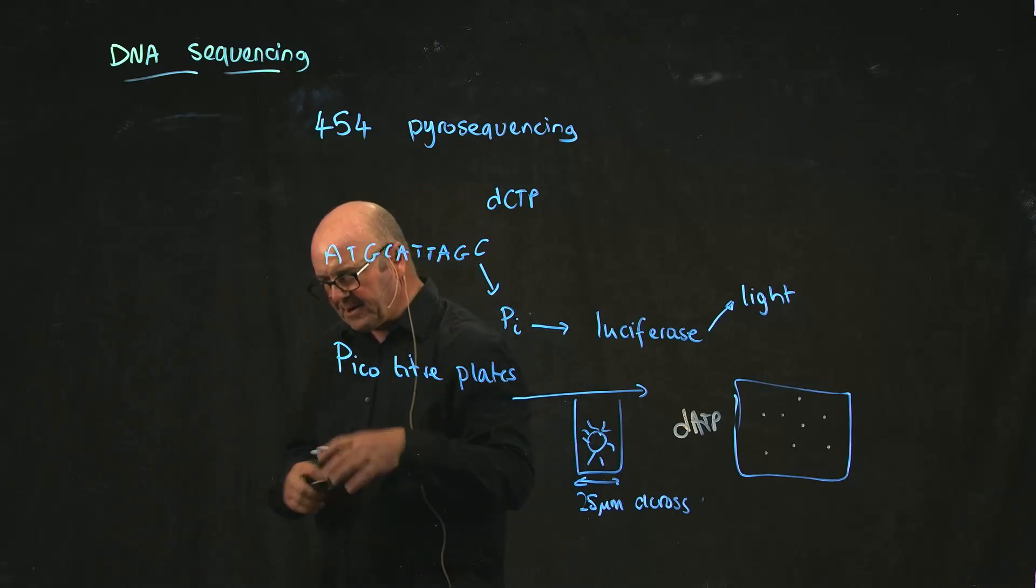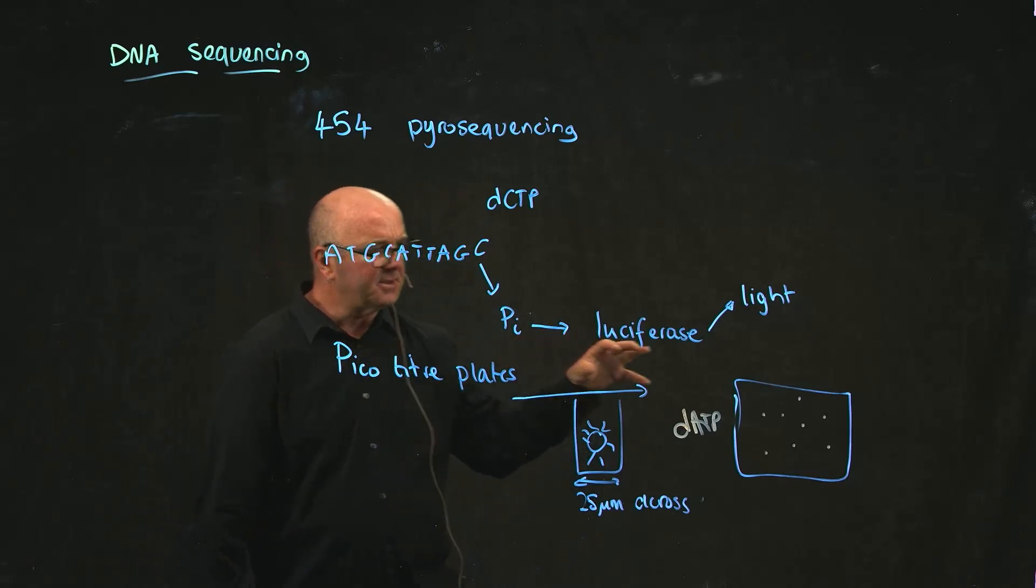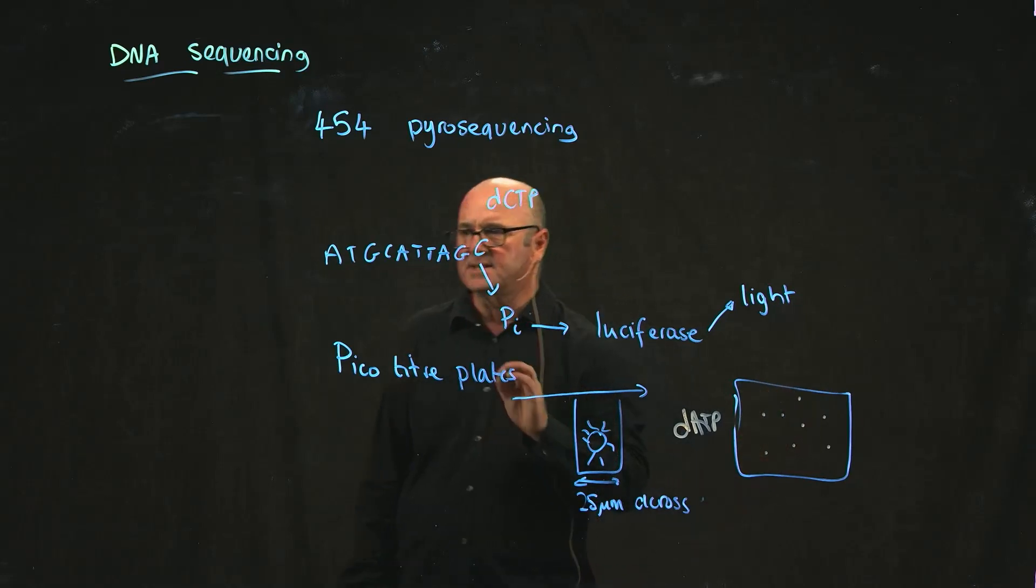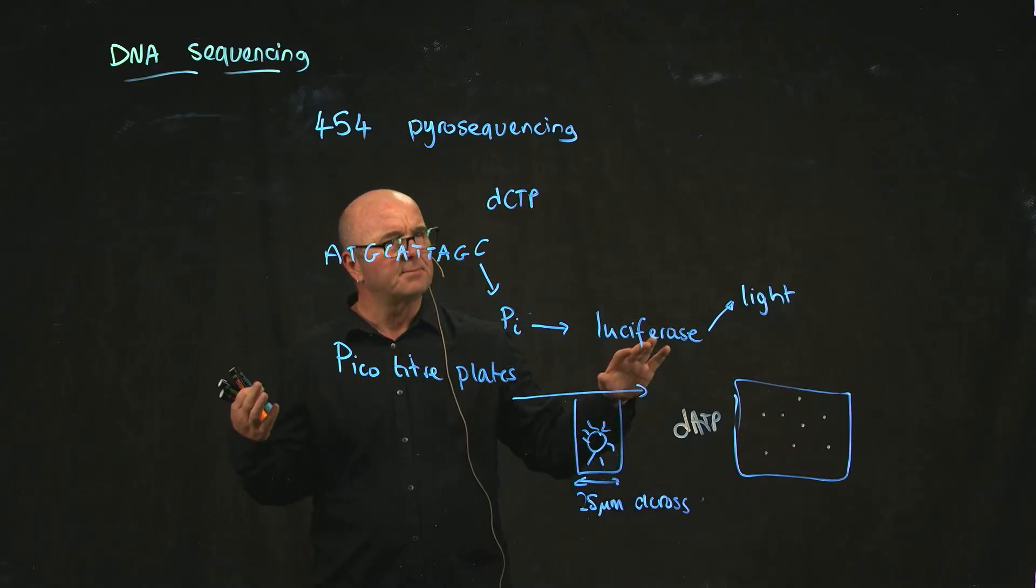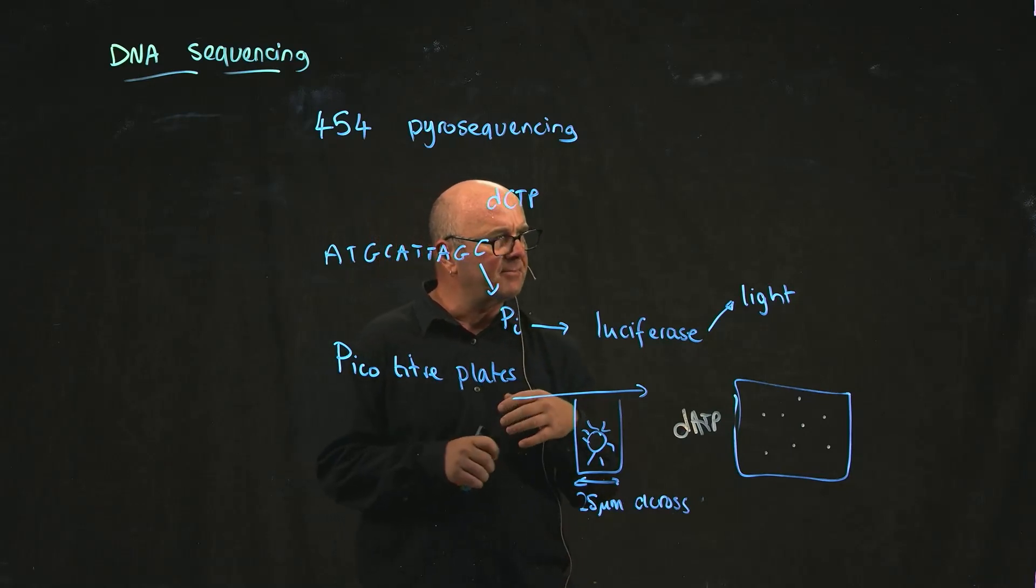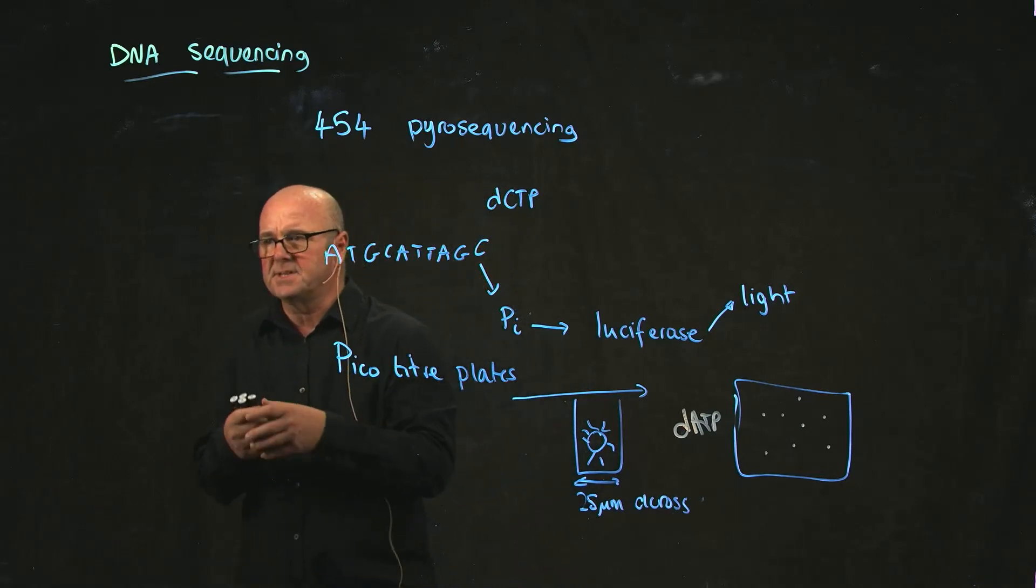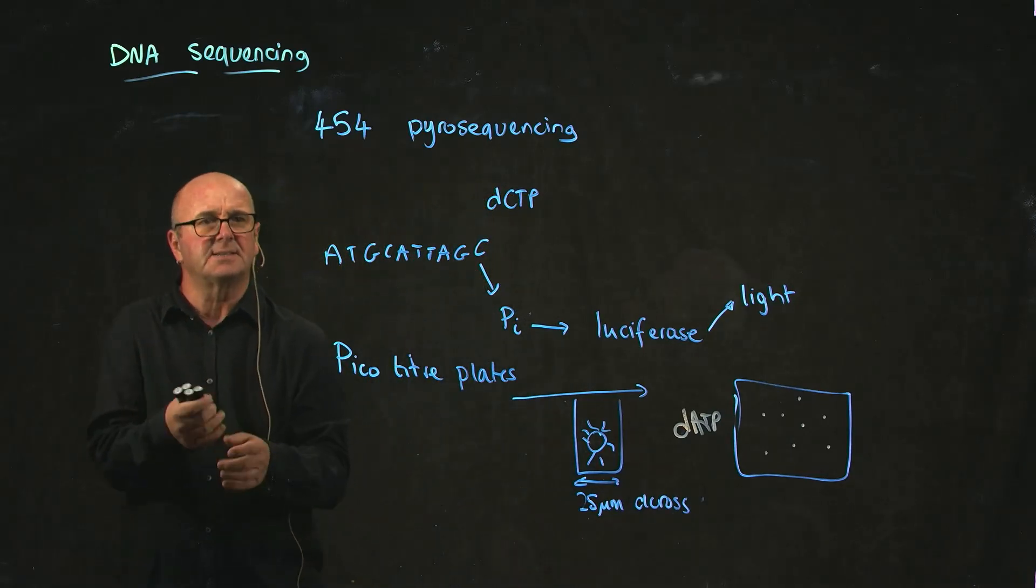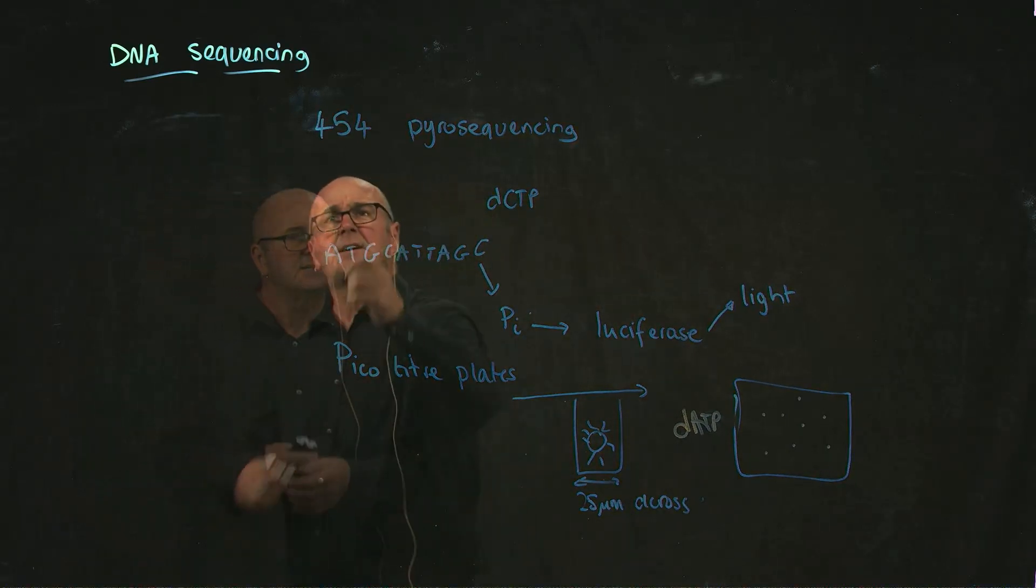You have a very high-resolution camera that sits looking at this well, and it takes a photo every time you're washing across something. Then you deconvolute that photo and say: where did I see As, where did I see Cs, where did I see Gs, where did I see Ts? That's how you do it.